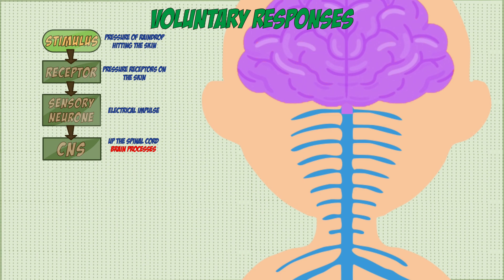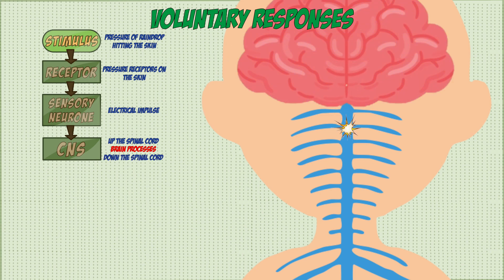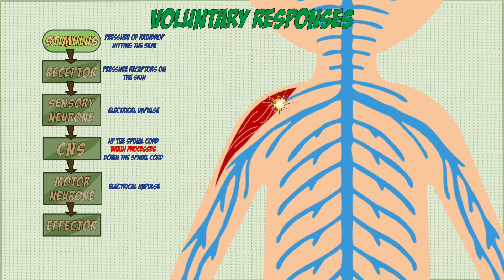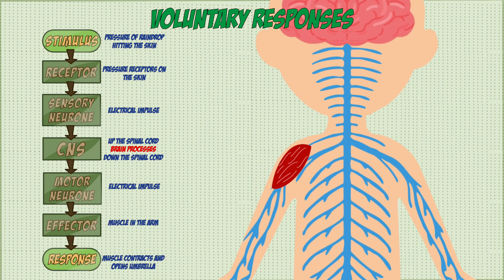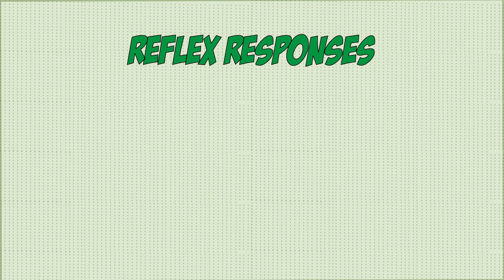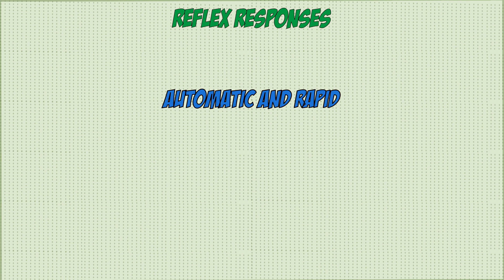The brain then makes a decision to open an umbrella and sends the information back down the spinal cord via the motor neuron. The motor neuron takes this electrical impulse to the relevant effector, which in this case is the muscle in your arms. These muscles create a response by contracting and opening the umbrella.